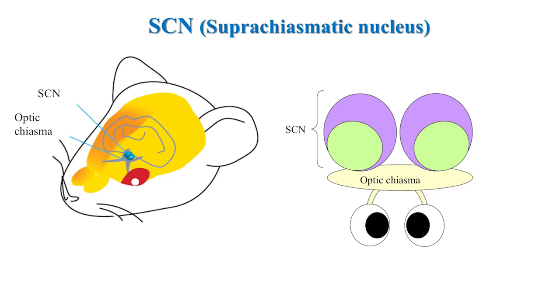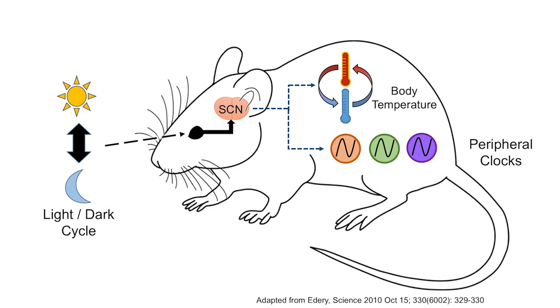The SCN contains about 20,000 neurons and controls circadian patterns of behaviors such as sleep and wake, hormone secretion such as melatonin and cortisol, and other physiological functions such as heart rate and body temperature.